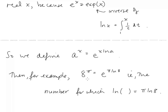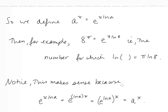For example, 8 to the pi that we were just looking at would be defined as e to the pi ln 8 — that is the number for which the ln function takes on the value pi ln 8. Notice that this makes sense in terms of the rules of exponents we already have for rational numbers, because e to the x ln a can be written as e to the ln a times x, and we can compute this as e to the ln a, all taken to the x power, which is a to the x.